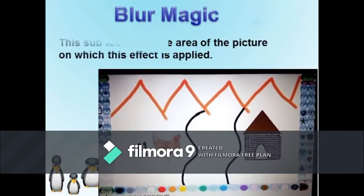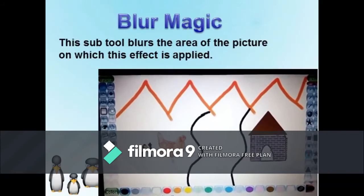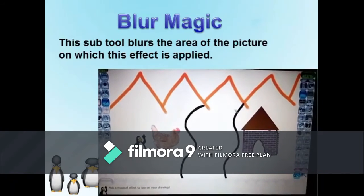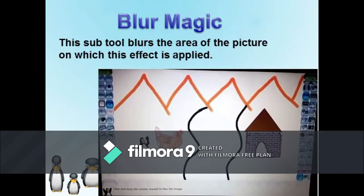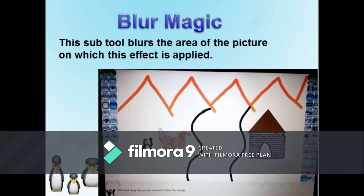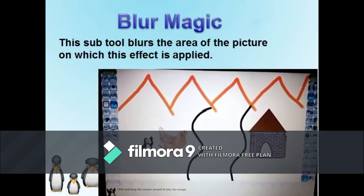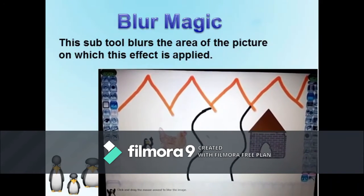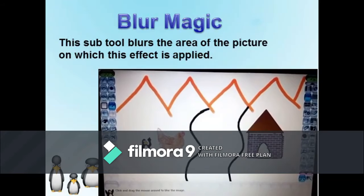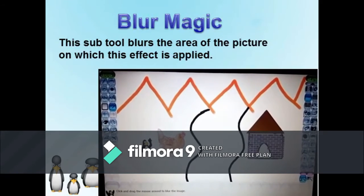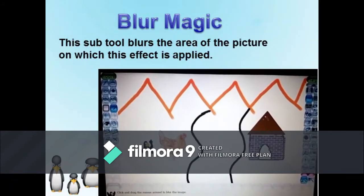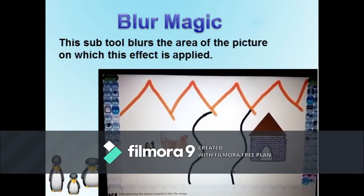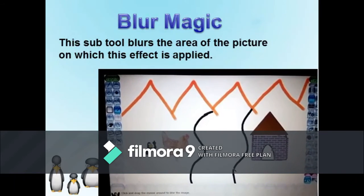Blur Magic: This sub-tool blurs the area of the picture on which this effect is applied. Let us see how it works. Select the magic tool and then the blur effect from the sub-tool box. Apply it all over the boundary of the picture and see how it works. Every time you use this tool, the image will fade a little more than the original one.